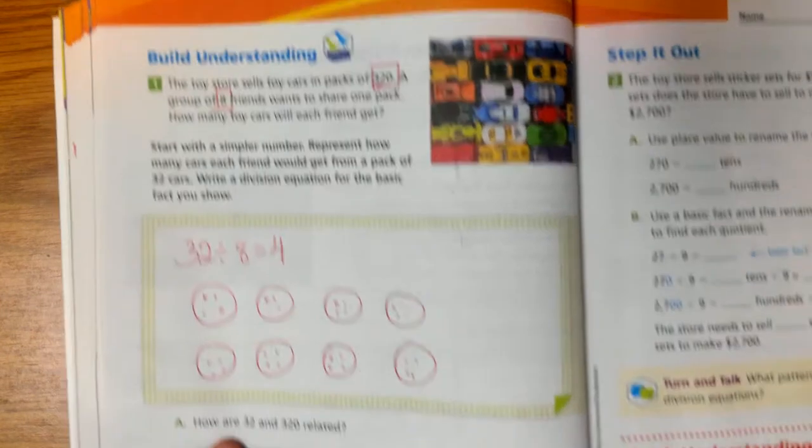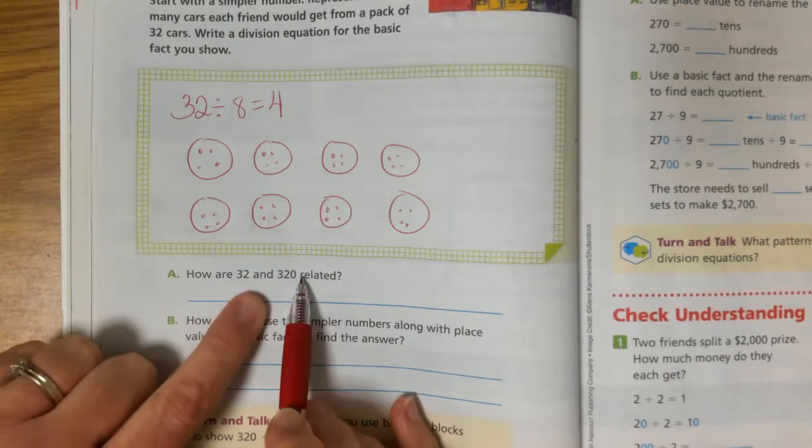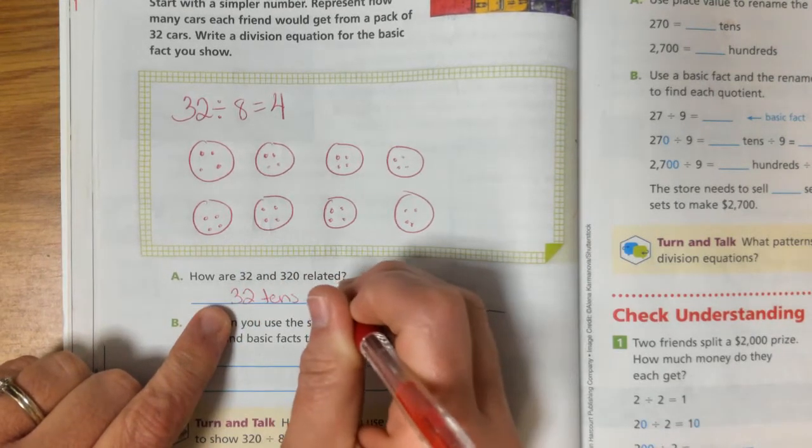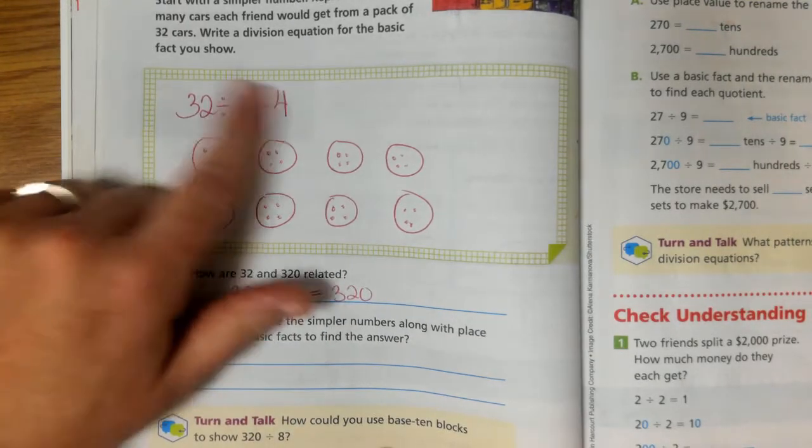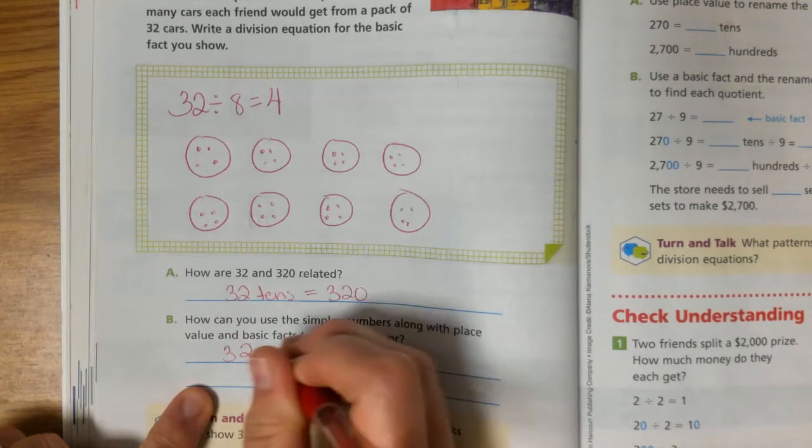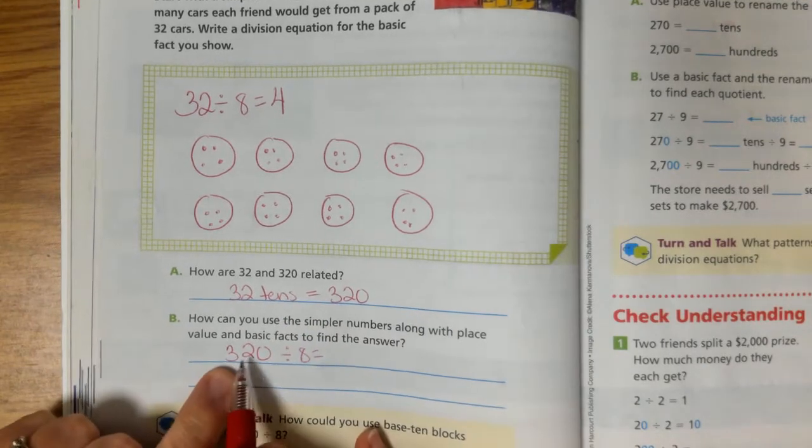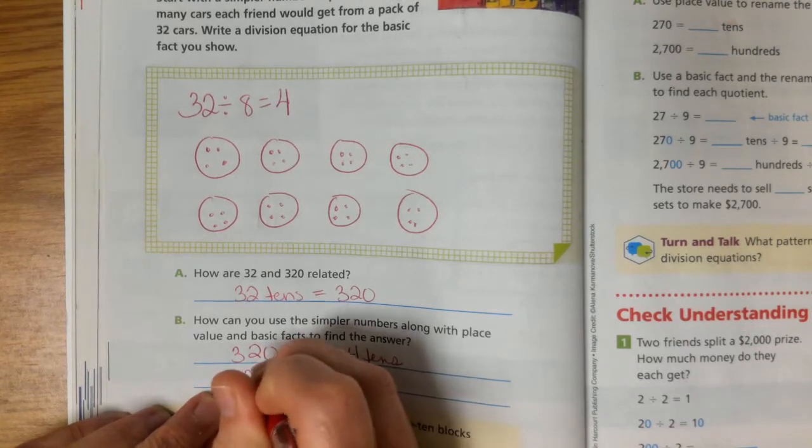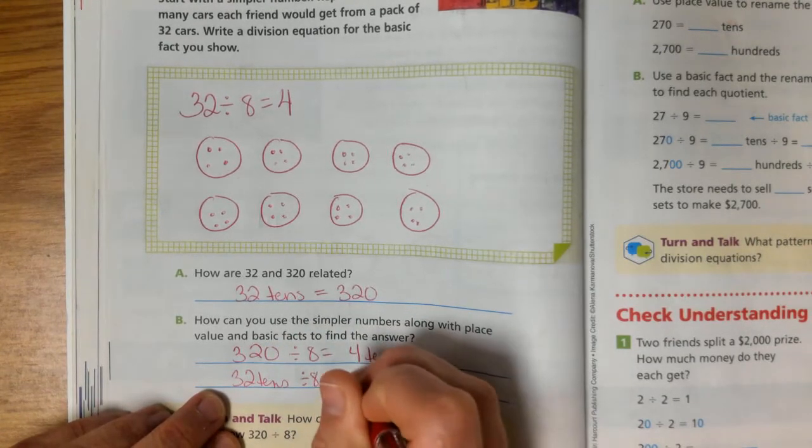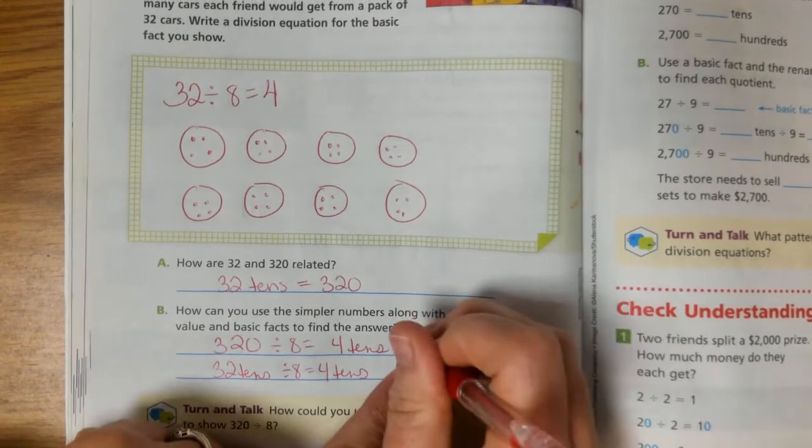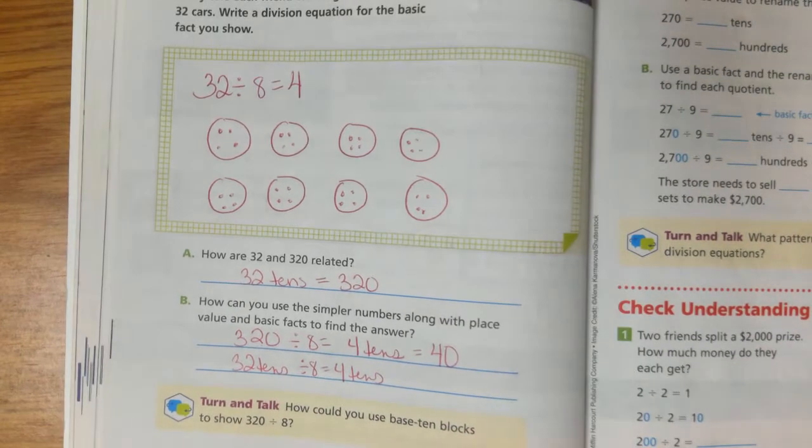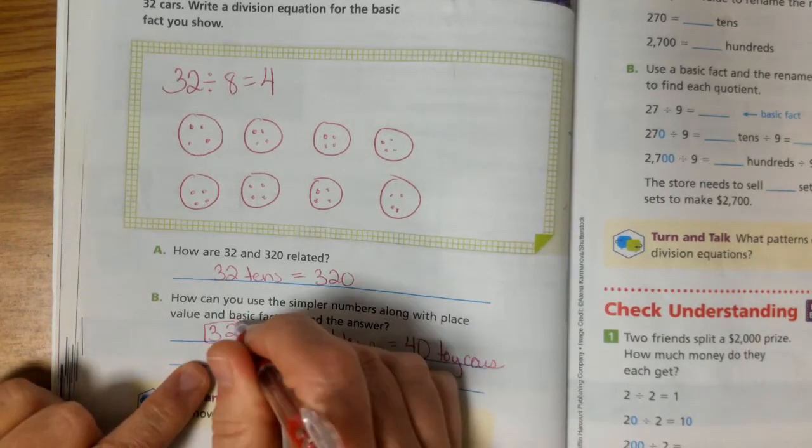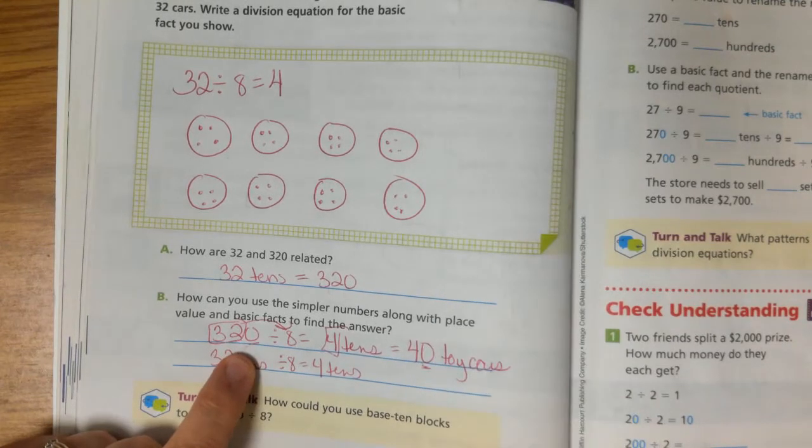So how are 32 and 320 related? Well, you're just renaming this. If I have 32 tens, isn't that the same as 320? So what could I do to this problem, so that way I could do 320 divided by 8? I renamed this to 32 tens. So 32 tens divided by 8 would equal 4 tens, right? 32 tens divided by 8 equals 4 tens. And 4 tens is the same as the number 40. So 320 divided by 8 equals 40. So each kid would get 40 toy cars. So notice how we could take our 32, divide it by 8, and then what did I put at the end? The 0 that was there.